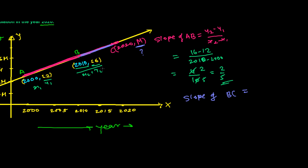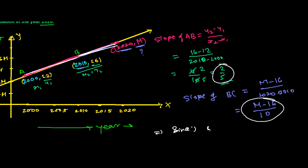Slope of BC will be Y2 minus Y1, that is M minus 16, over X2 minus X1, 2020 minus 2010. So it's going to be M minus 16 over 10. But do you know one thing? The slope of this BC and the slope of this AB both are equal. So I can equate this 2 over 5 and this one. Since slope of AB equals slope of BC, it will be 2 by 5 equals M minus 16 over 10.